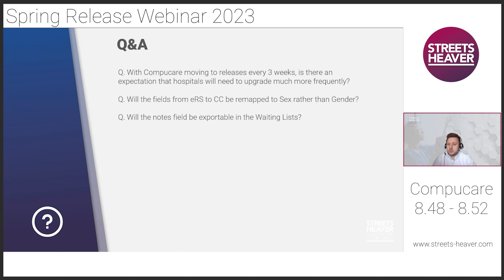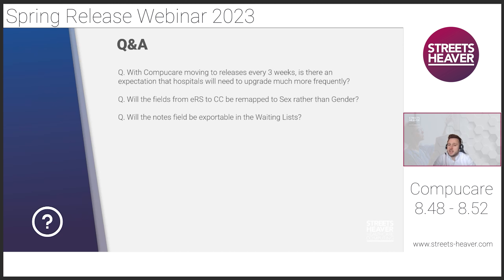Second question — will fields from ERS to CompuCare be remapped to sex rather than gender? Right now, we've not amended this. Our understanding is that what we receive in the PDF information from the patient as part of an ERS referral is 'persons dated gender' — a specific NHS data dictionary field also used in statutory reporting to FIN or CDS. We'll need to check with our developers to see what we receive from PDS and whether any mapping of biological sex could be done. Third — will the notes field be exportable in waiting lists? Currently, it doesn't export to CSV extract; it's only displayed in the grid to help booking users. We can log this as a small change for future builds.